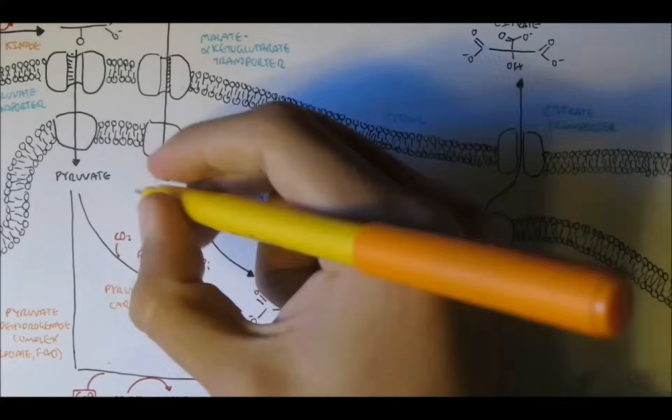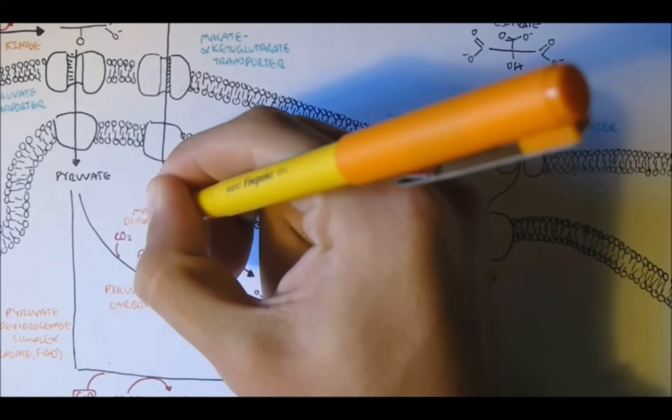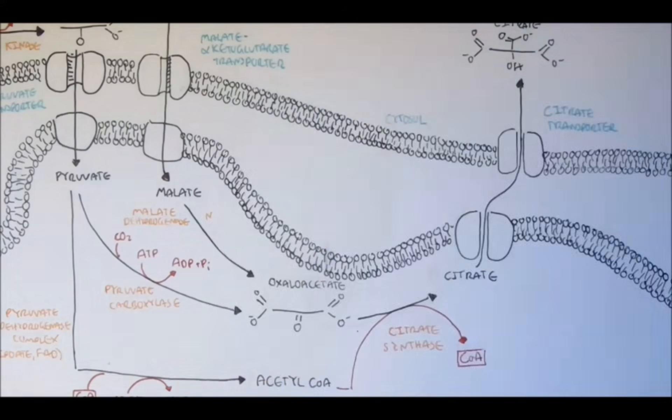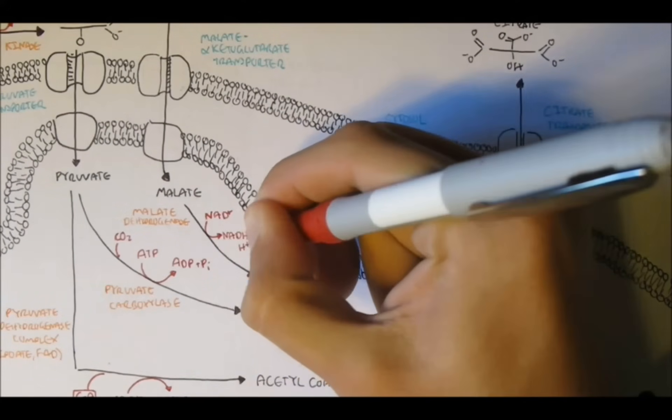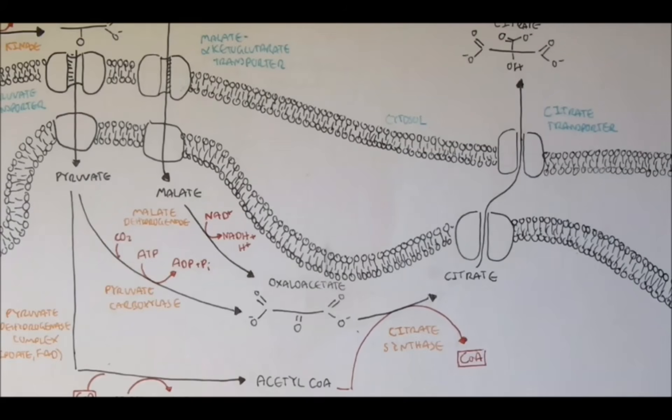Now, anyways, malate enters the mitochondria and through an oxidation process, it can convert to oxaloacetate by the enzyme malate dehydrogenase. So, NAD+ is converted to NADH.